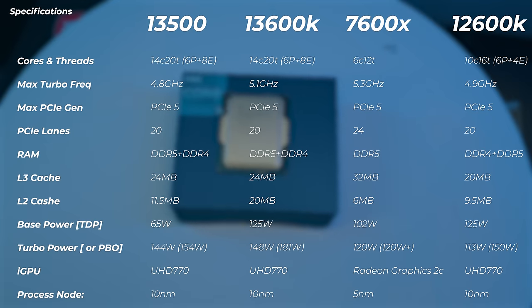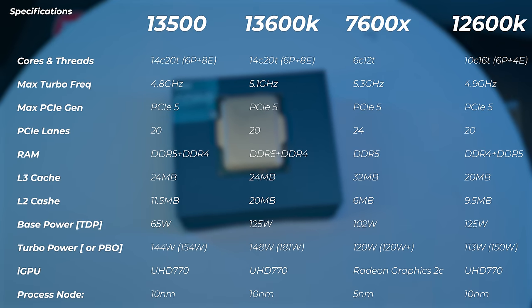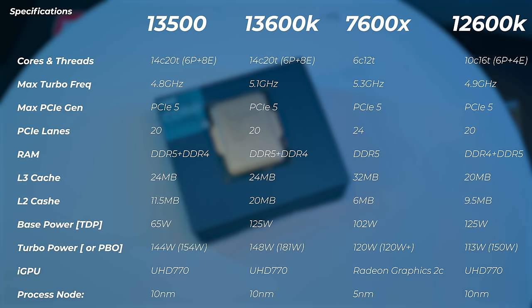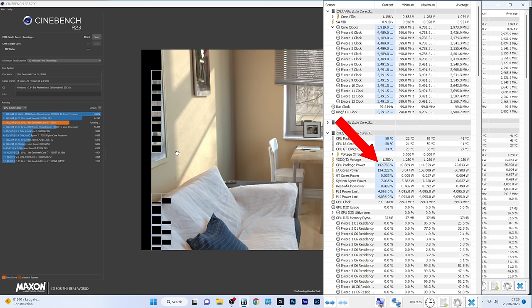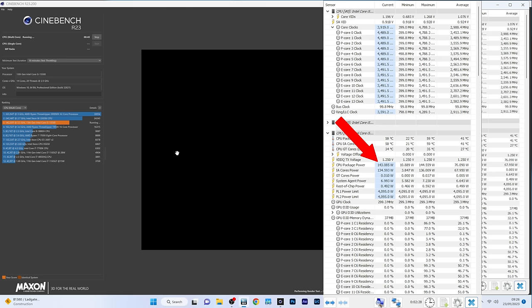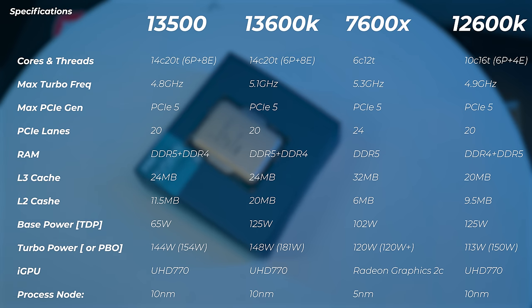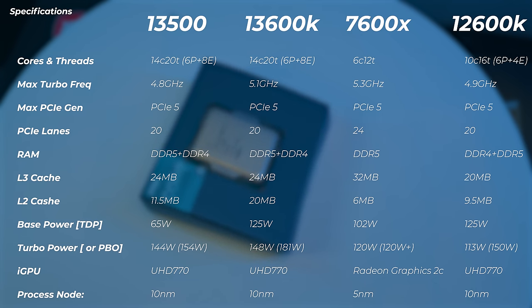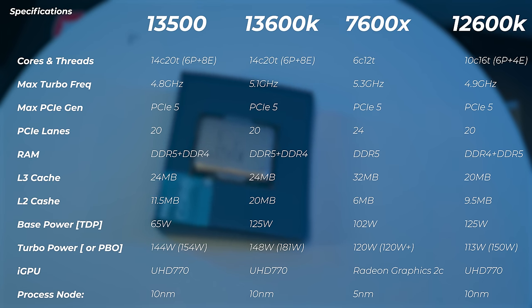The TDP is 65 watts, which is quite a bit less than the 13600K, and the max turbo power is 154 watts from the socket — though in testing I only saw up to 144 watts pulled, which is just slightly less than the 13600K. This chip has the full UHD 770 iGPU and is on the same 10 nm process, priced at around $250.